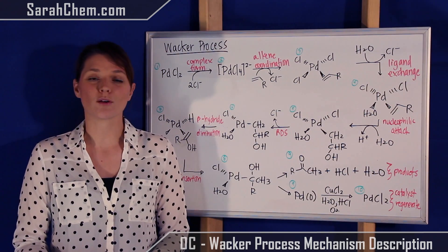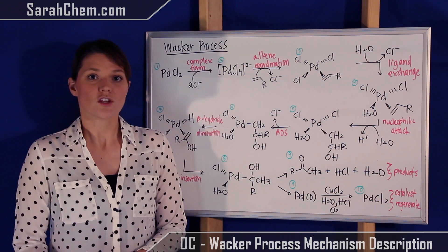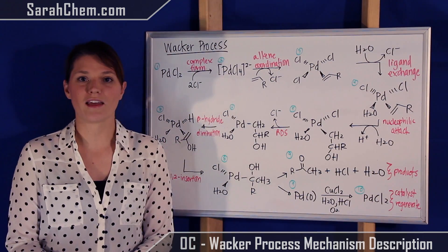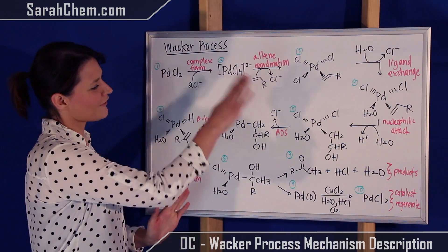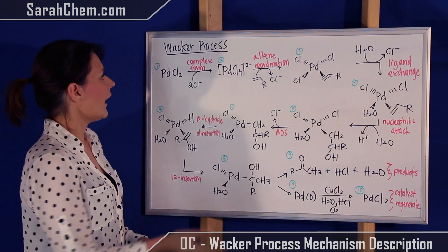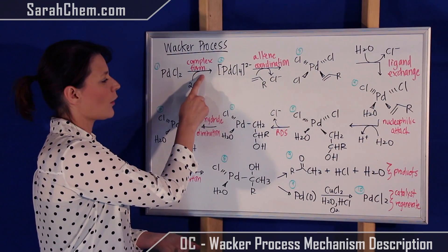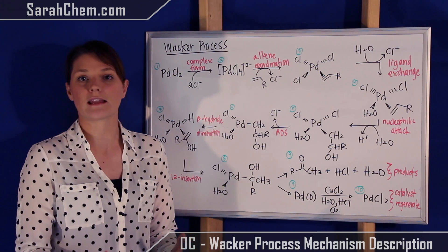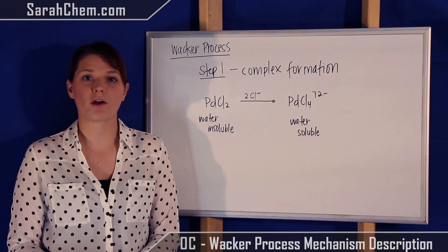None of the arrows are very well described at this point. The process looks kind of complex — there are about 10 steps occurring, and each one has its own name: complex formation, alkene coordination, ligand exchange, etc. Let's take a look at the very first step.